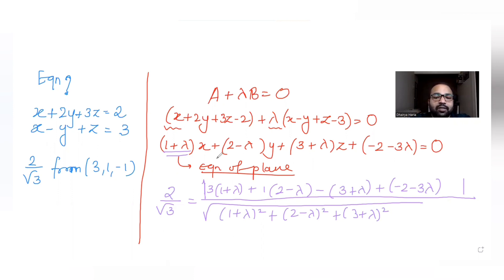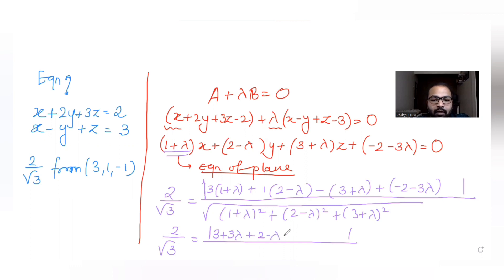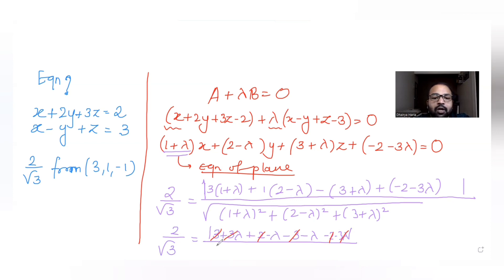Simplifying the numerator: 3 + 3λ + 2 - λ - 3 - λ - 2 - 3λ. The constants: 3 + 2 - 3 - 2 = 0. The λ terms: 3λ - λ - λ - 3λ = -2λ. So the numerator simplifies to |-2λ|.